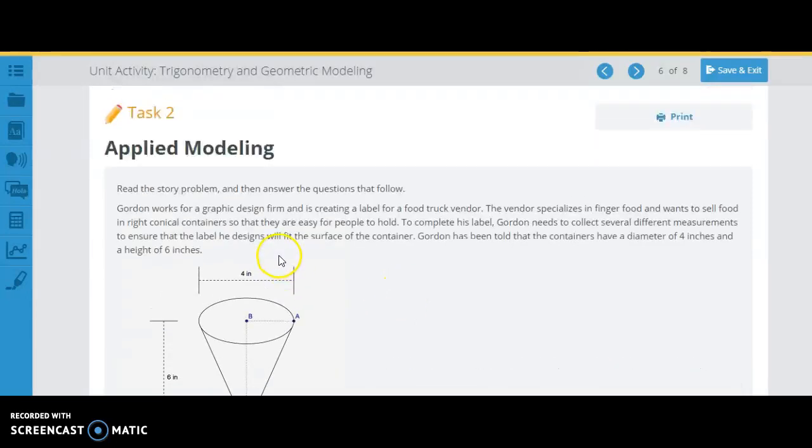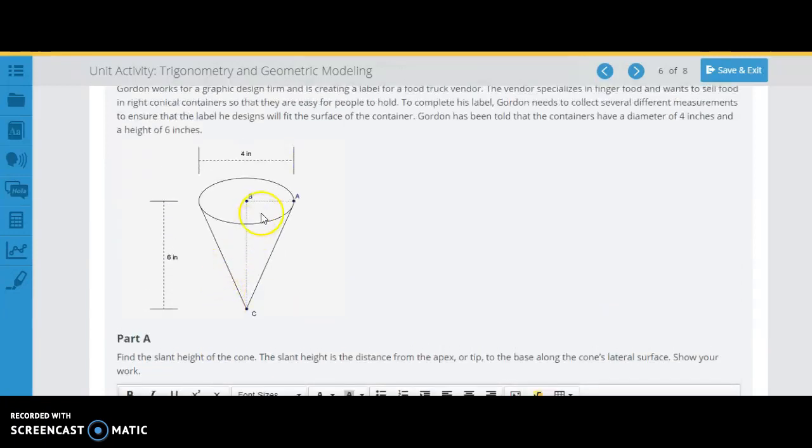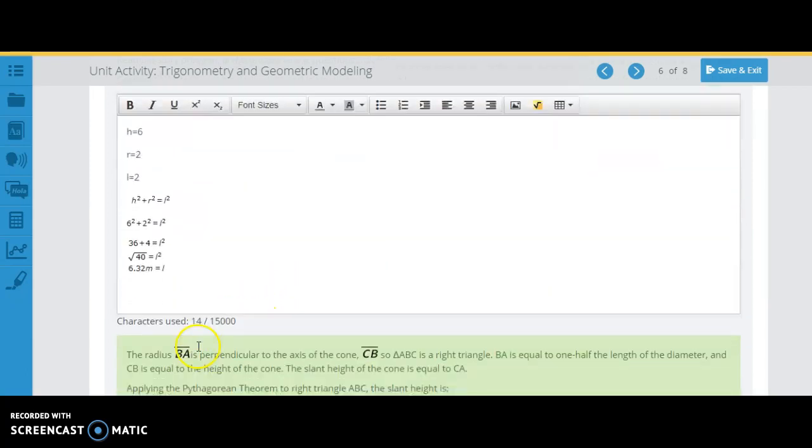Alright, you did a perfect job on the first part of this activity, finding the slant height of the cone. We can see that we made a right triangle here, and with right triangles we can use a squared plus b squared equals c squared. So you realize that this was 2, not 4, right, because it's half. So we have 6 squared plus 2 squared equals the slant height squared. So you found that perfect job.